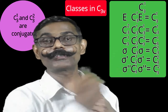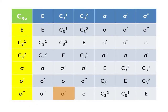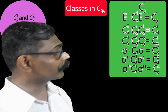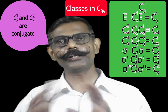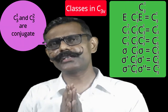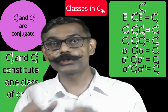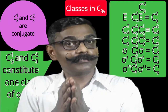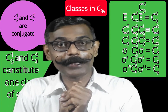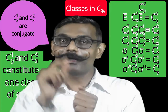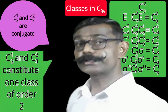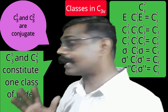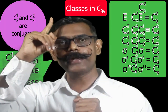Also σ'' × C3¹ × σ'' — from the multiplication table, σ'' × C3¹ = σ', and σ' × σ'' = C3². So C3² is a similarity transform of C3¹ in all three sigma cases. Conclusion: C3¹ and C3² belong to the same class; they are conjugate to one another. This class has order two, which divides the group order of six.